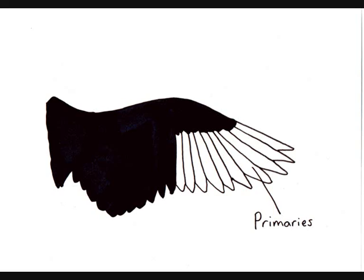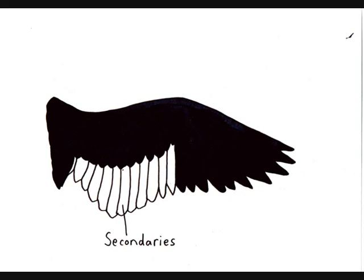On the upstroke, the primaries can be separated and rotated, reducing air resistance while still producing some thrust. The secondaries remain close in flight and can't be individually separated like the primaries. They help to provide lift by creating the airflow shape of the bird's wings. They are shorter and broader than primary feathers, with blunter ends.